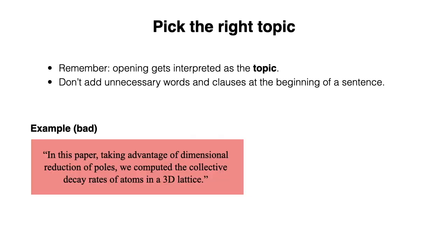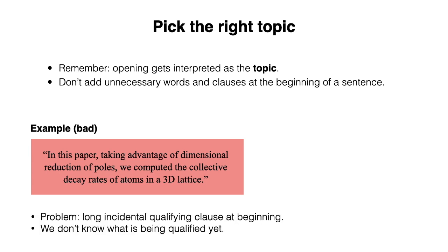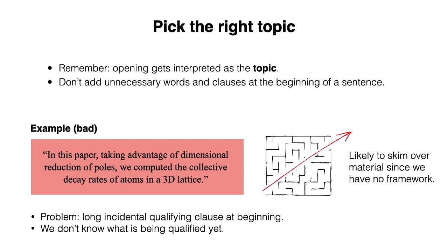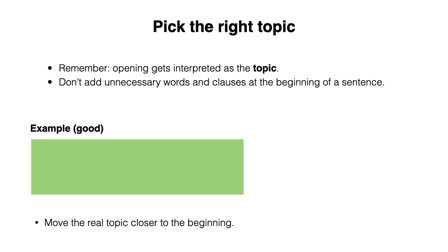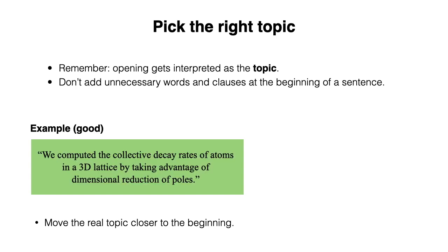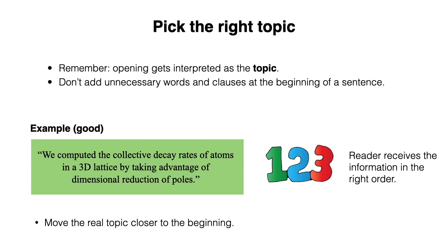Now, let's look at another example: "In this paper, taking advantage of dimensional reduction of poles, we computed the collective decay rates of atoms in a 3D lattice." So what's the problem here? Well, we have this long incidental qualifying clause at the beginning, but we don't even know what's been qualified yet, so we're likely to skim over the material since we have no framework. But we can fix this by moving the real topic closer to the beginning: "We computed the collective decay rates of atoms in a 3D lattice by taking advantage of dimensional reduction of poles." Here, the reader receives the information in the right order.